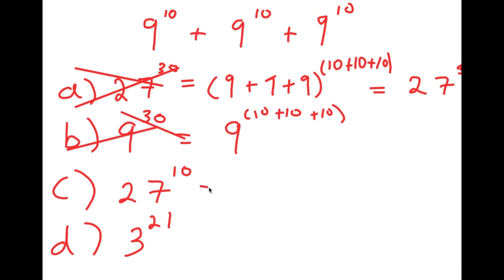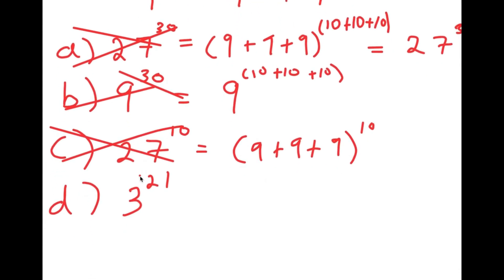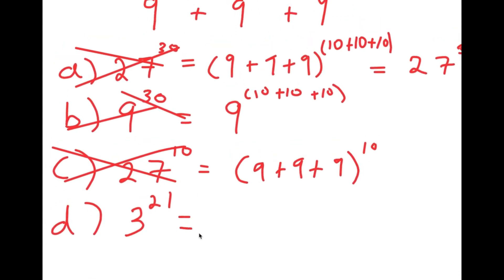For C, 27 to the power of 10 was gotten by adding the bases but keeping the exponent the same — this is also wrong, as that's not how you add exponents. So D, 3 to the power of 21, is by process of elimination the right answer. Let's see how to get it. We start with 9 to the power of 10 plus 9 to the power of 10 plus 9 to the power of 10.